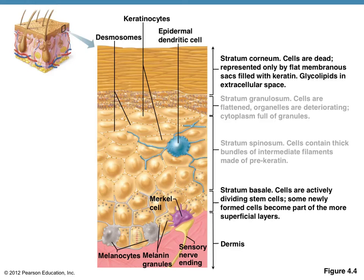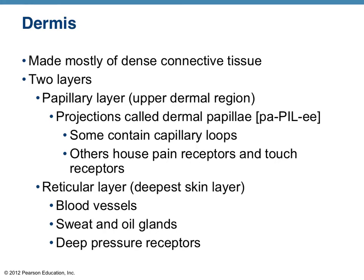You can check this out in the book and understand the characteristics of the two epidermal layers you need to be responsible for. The dermis is mostly composed of dense connective tissue, as opposed to the epithelium that the epidermis is made of. It has two layers: the papillary layer and the reticular layer. In the papillary layer you have projections called dermal papillae, and these actually produce fingerprints — if you look at the tips of your fingers, you can see how these projections push up through even the epidermis. The reticular layer is where most of the rest of the accessory structures are going to be found.